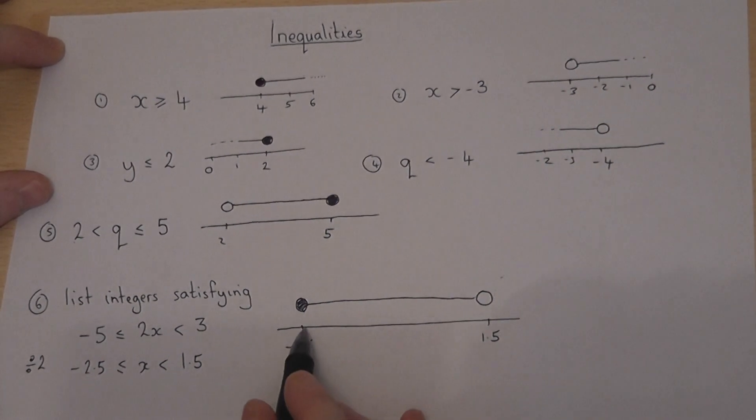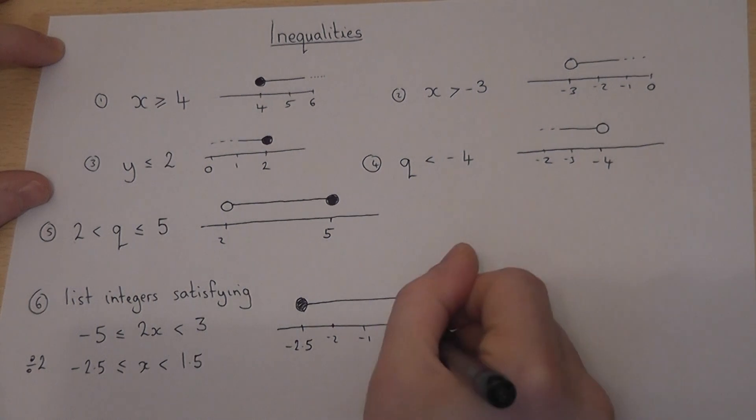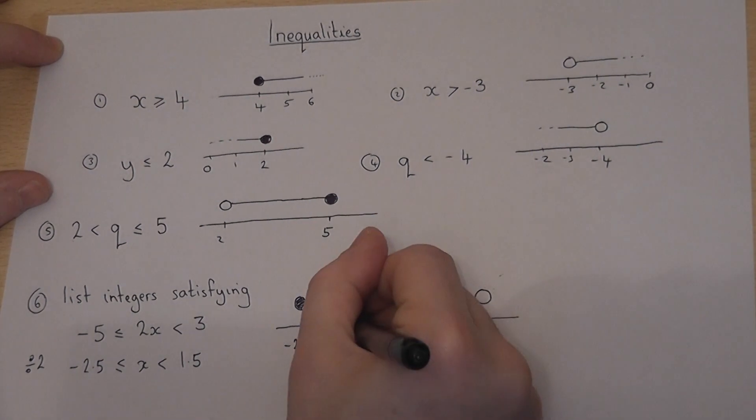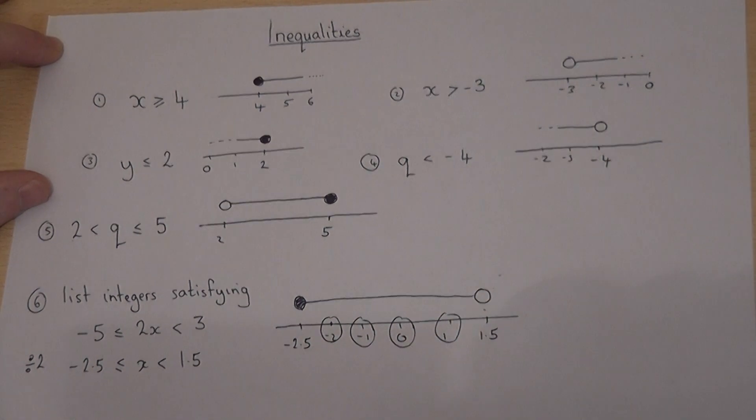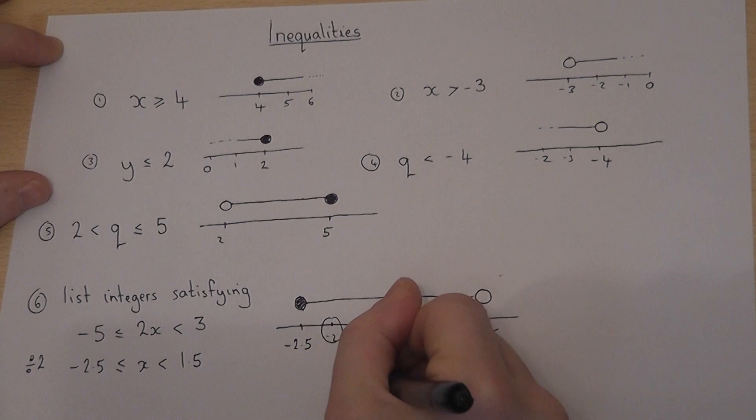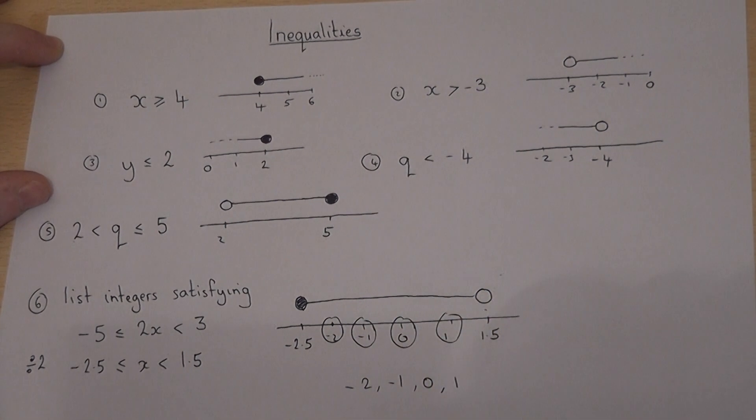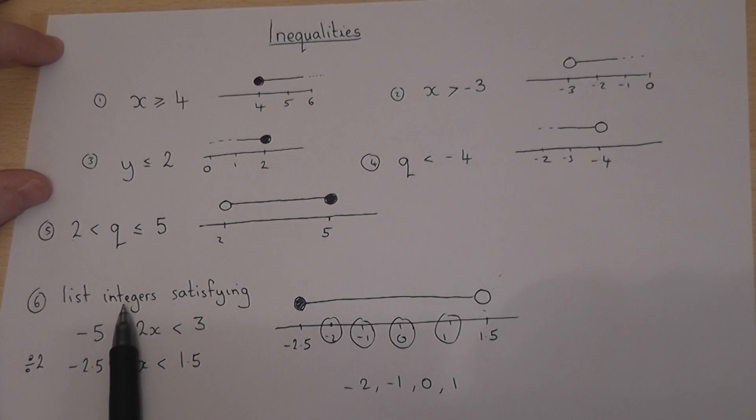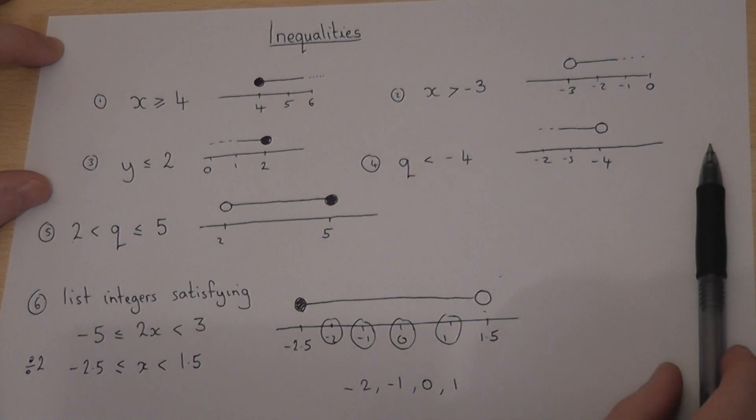Well, minus 2.5, the first integer will be minus 2, then minus 1, then 0, and then 1. So these here are our whole numbers. So x can be minus 2, minus 1, 0, or 1. So again, we're looking for the whole numbers which satisfy the given range of values.